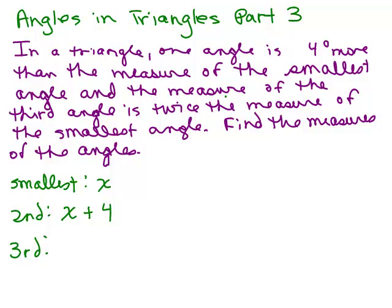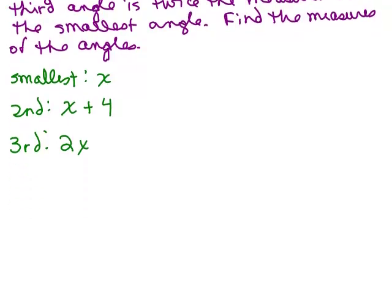What else do we know? The measure of the third angle is twice the measure of the smallest angle. The smallest angle is x, and it's twice that measure, so that would have to be 2x. Now we have to use our knowledge about the angles in a triangle. We know that the sum of the three angles in a triangle add up to 180 degrees. That's the next step is to write our equation.